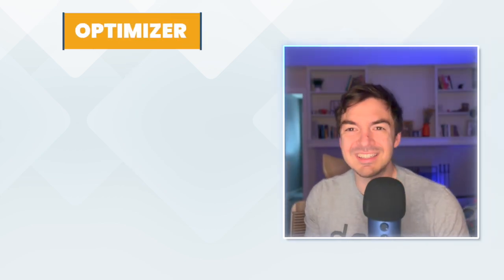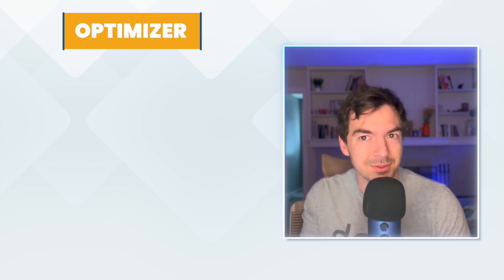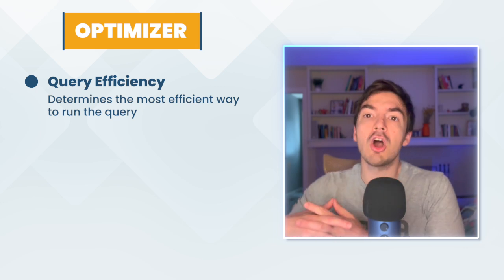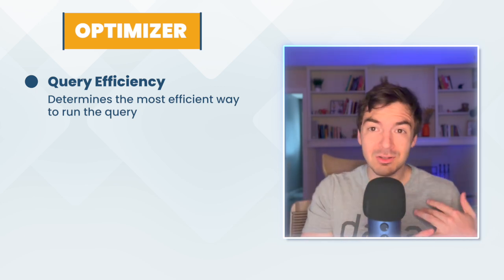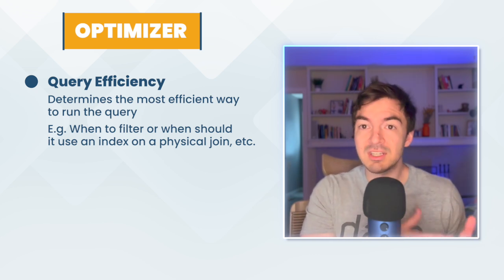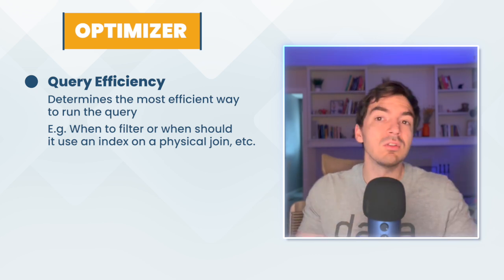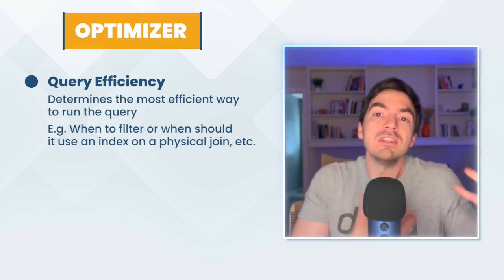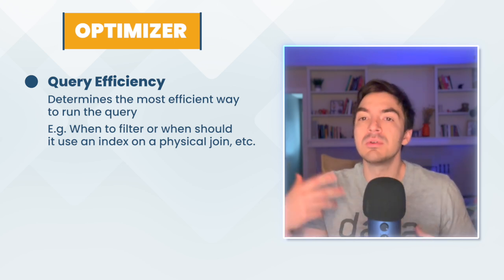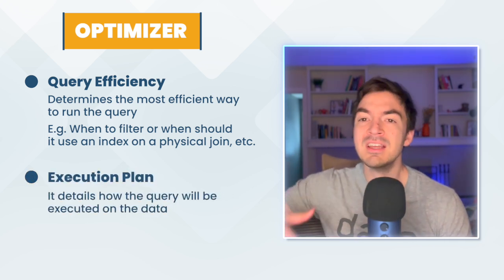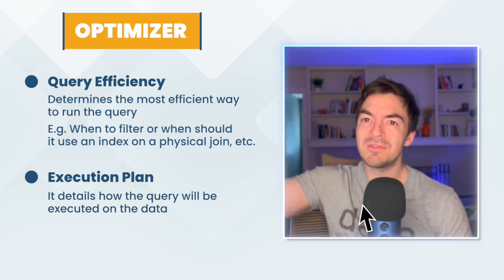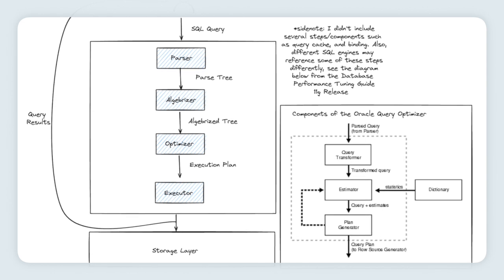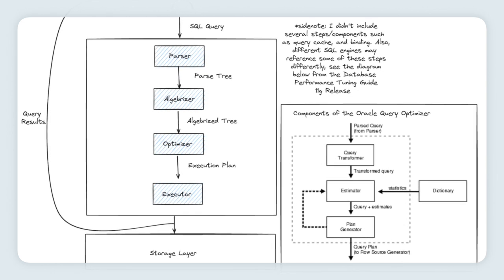The logical query plan then gets sent to the optimizer — a name that's pretty consistent across most database systems. As that name suggests, it goes through and tries to figure out what is the optimal route to run this query: going back to those physical joins, when to filter, when to use an index, whether it has query statistics on certain tables. It looks through all of this and tries to figure out the optimal method to approach the query. Once it figures that out, it sends what is known as an execution plan. So we've gone from a parse tree, to a logical query plan, to the optimizer producing an execution plan to be run against your data.